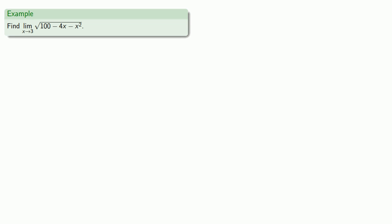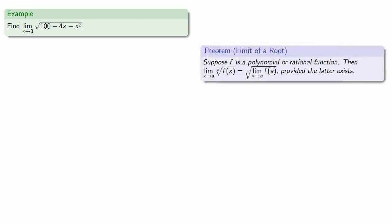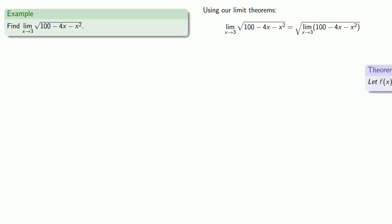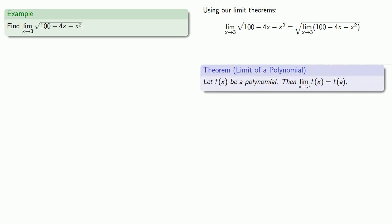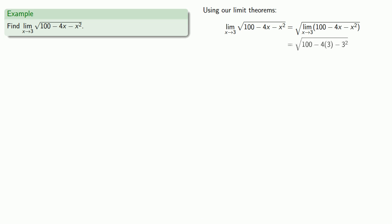So if I want to find the limit as x approaches 3 of the square root of 100 minus 4x minus x squared, this is an algebraic function, so I can evaluate it using our limit theorems. Since it's the limit of a square root, I can find this by taking the square root of a limit. Since this is the limit of a polynomial, I can evaluate it by evaluating the polynomial at 3, and that allows me to calculate the limit.